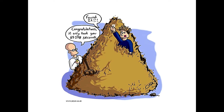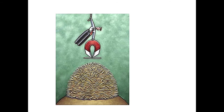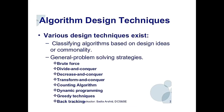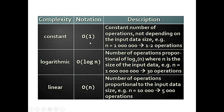So brute force means finding a needle from a haystack — you need clever techniques like a magnet. That is called an algorithm. Brute force is always there as the baseline, and then you improve it — like divide and conquer, or merge sort. There are various techniques: brute force, divide and conquer, decrease and conquer, and others.